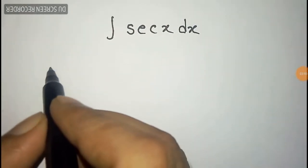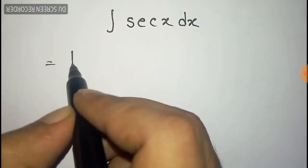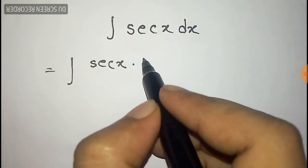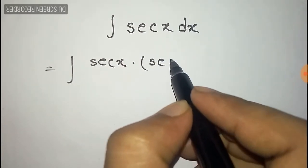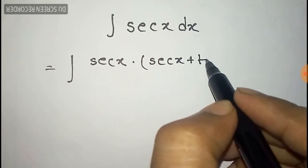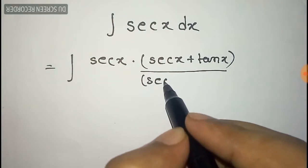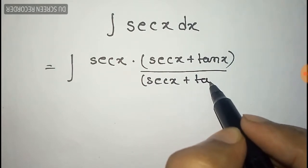We have to integrate sec x dx, so we can write it as sec x times (sec x plus tan x) divided by (sec x plus tan x). I mean multiplying sec x plus tan x on both numerator and denominator.